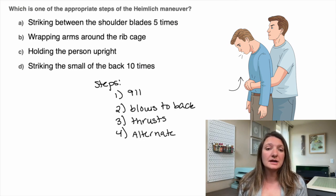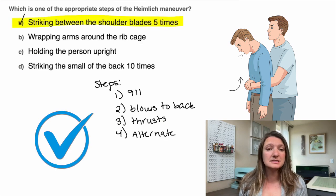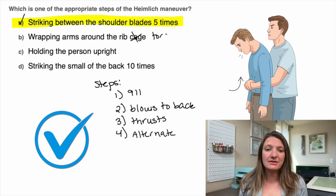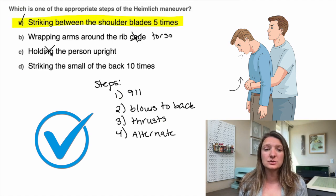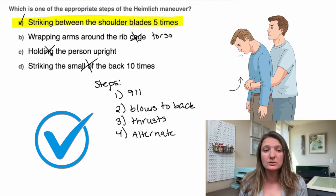If we look at our answers, we see that A is striking between the shoulder blades five times — that is one of the steps, so that's our answer. It's not wrapping our arms around the rib cage, it's around the torso. We're not holding that person upright, and we're not striking the small of the back. We're striking between the shoulder blades.